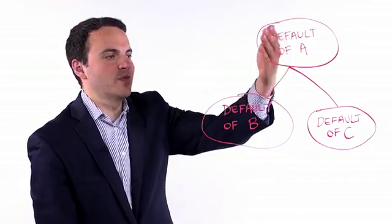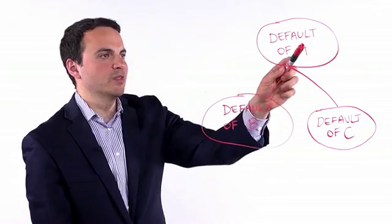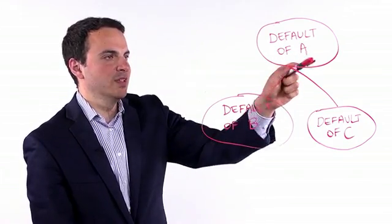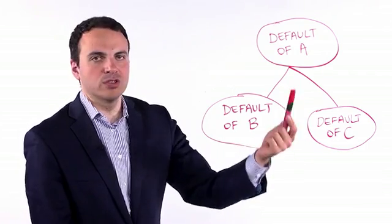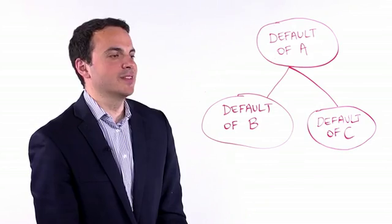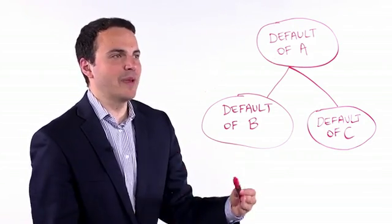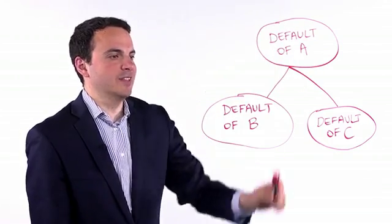And we have that these events, some of them interact with each other. So we have the interaction between the default of A and default of B, default of A and default of C. But we have that B and C do not interact directly in the sense that their probabilities of default are mediated through the probability of default of entity A.